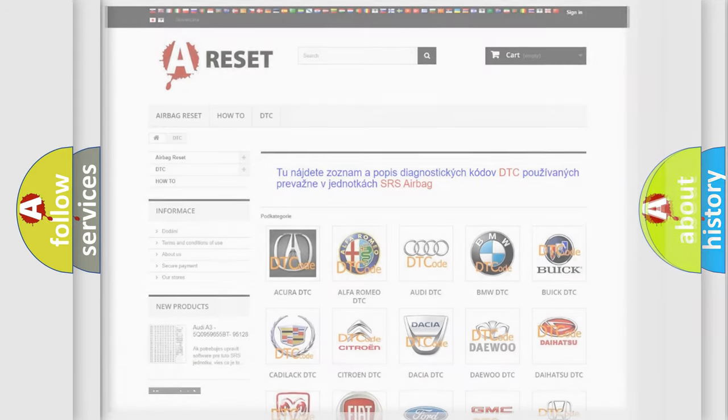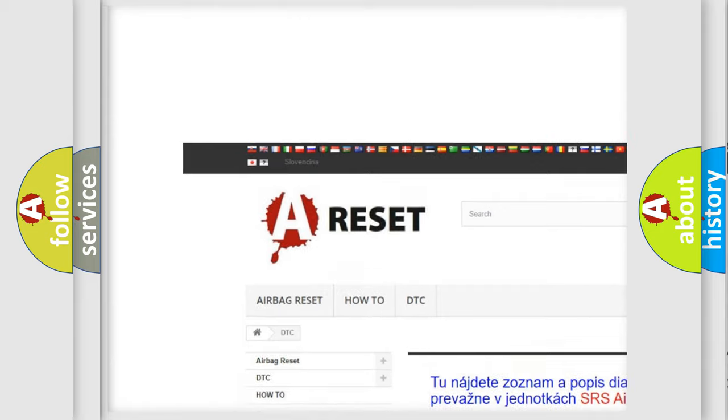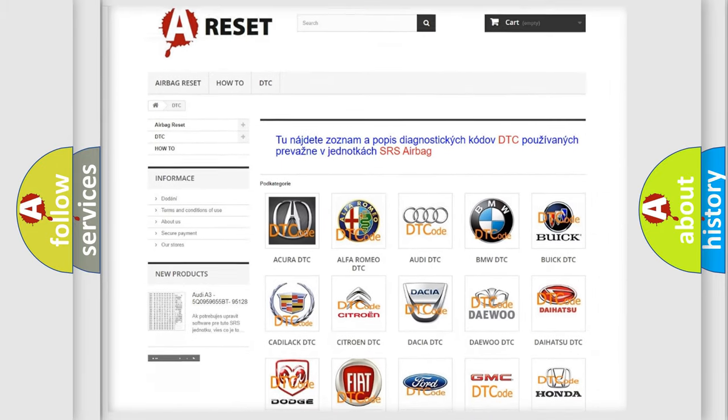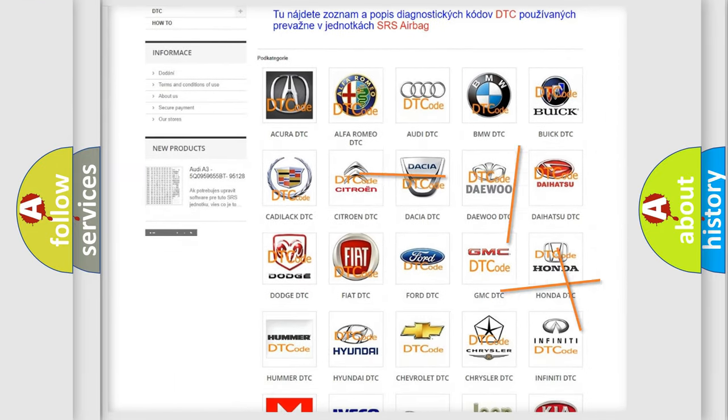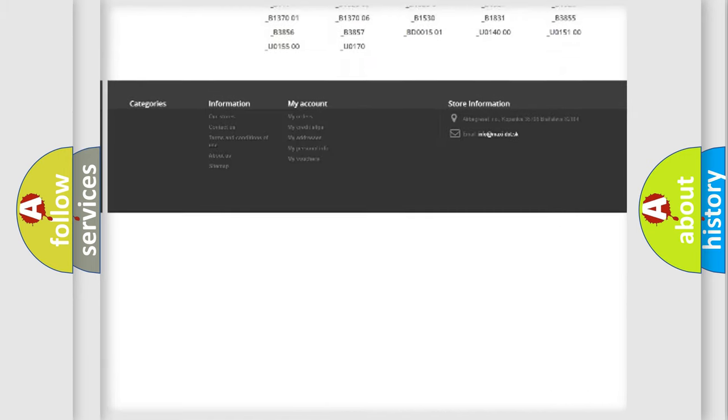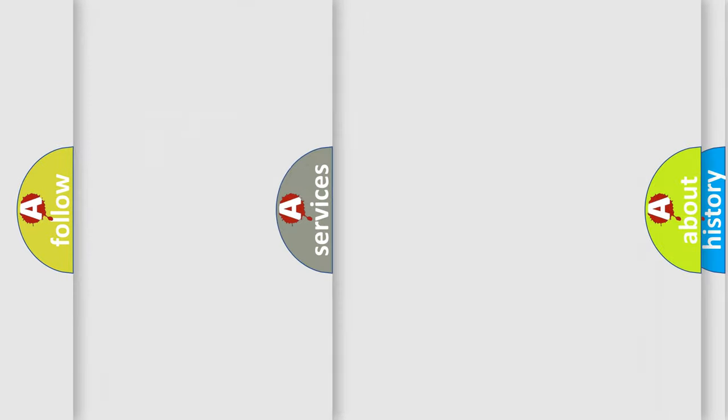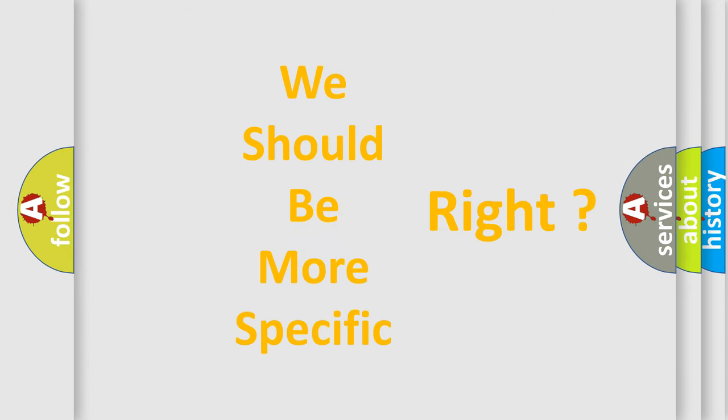Our website airbagreset.sk produces useful videos for you. You do not have to go through the OBD2 protocol anymore to know how to troubleshoot any car breakdown. You will find all the diagnostic codes that can be diagnosed in GMC vehicles, and many other useful things. The following demonstration will help you look into the world of software for car control units.